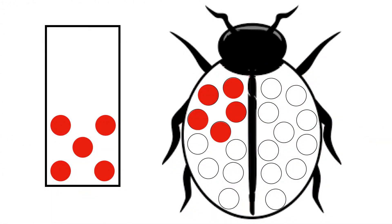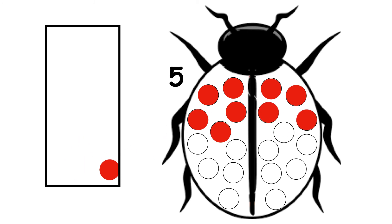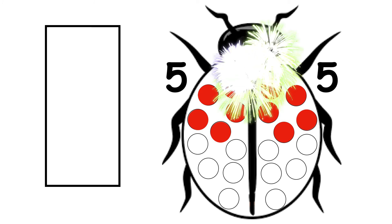Ladybird has 5 spots. 1, 2, 3, 4, 5. How many more does she need to make 10? 1, 2, 3, 4, 5. 5 and 5 make 10.